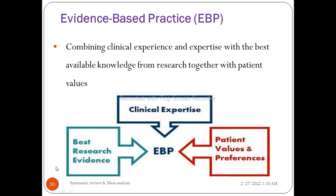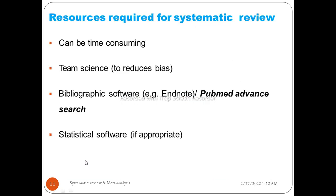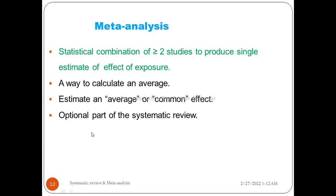Systematic review is part of evidence-based research. It is time-consuming and is team science - to reduce bias, at least two people are required, but five or more individuals is best. Bibliographic software and statistical software like Stata are very important tools. Meta-analysis is the statistical combination of more than two studies to produce a single estimate of the effect of an exposure.